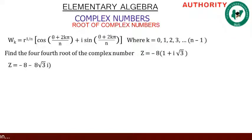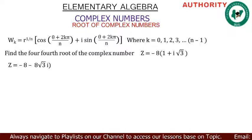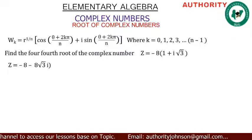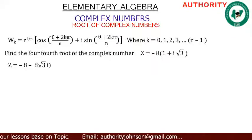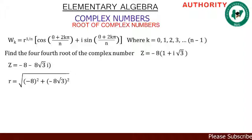Our formula says w_k = r^(1/n) [ cos((θ + 2kπ)/n) + i sin((θ + 2kπ)/n) ], where k = 0, 1, 2, 3, ... until n minus 1. We need to find k, n, θ, and r.